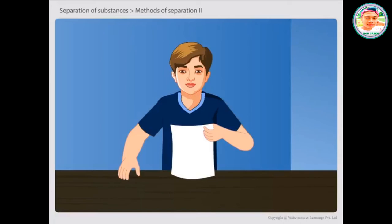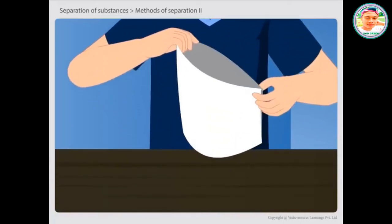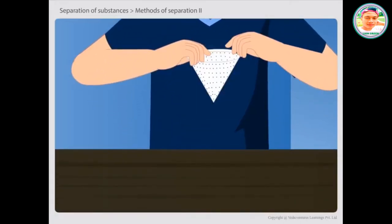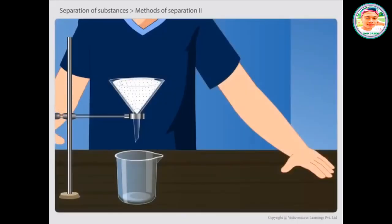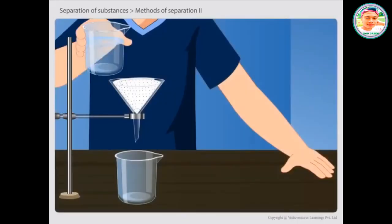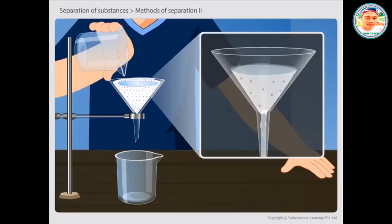A filter paper is folded in the form of a cone. This folded filter paper is fixed onto a funnel. The mixture to be separated is then poured on the filter paper. Solid particles in the mixture do not pass through it and remain on the filter. While the liquid can easily pass through it and gets separated from the solid particles.